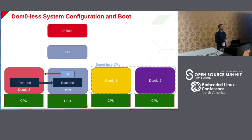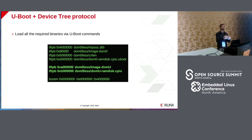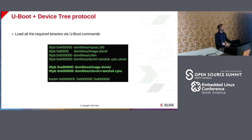How do we achieve that goal? First, we have U-Boot load more things into memory than it usually does. U-Boot usually loads the Xen hypervisor and the DOM0 kernel and RAM disk, and stops there. We extended the protocol to also load the kernel and RAM disk of the yellow VM and the kernel and RAM disk of purple. Step two: we boot Xen as usual, but then have Xen start in parallel all your domains on separate physical cores — DOM0, yellow, and purple all starting in parallel.